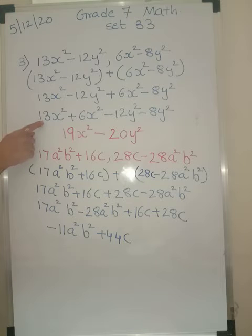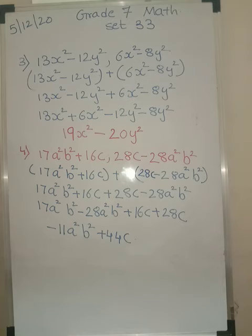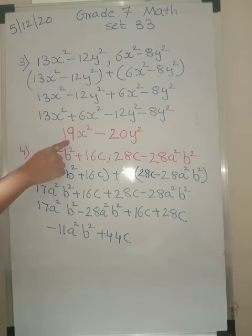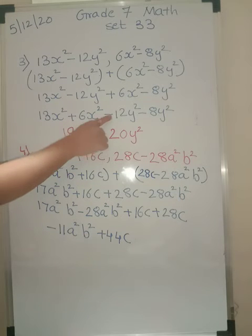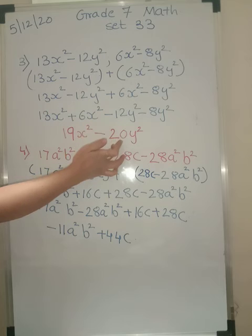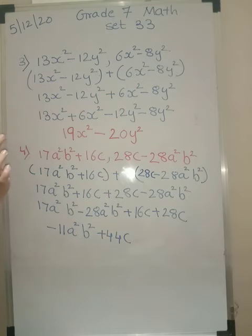So what you have? 13x squared. Now x squared and x squared you take together, so you will have 13x squared plus 6x squared, minus 12y squared minus 8y squared. So 13 plus 6 is 19x squared. Minus 12 minus 8 — same sign addition of numbers and the answer will have the same sign — so you have minus 20y squared.